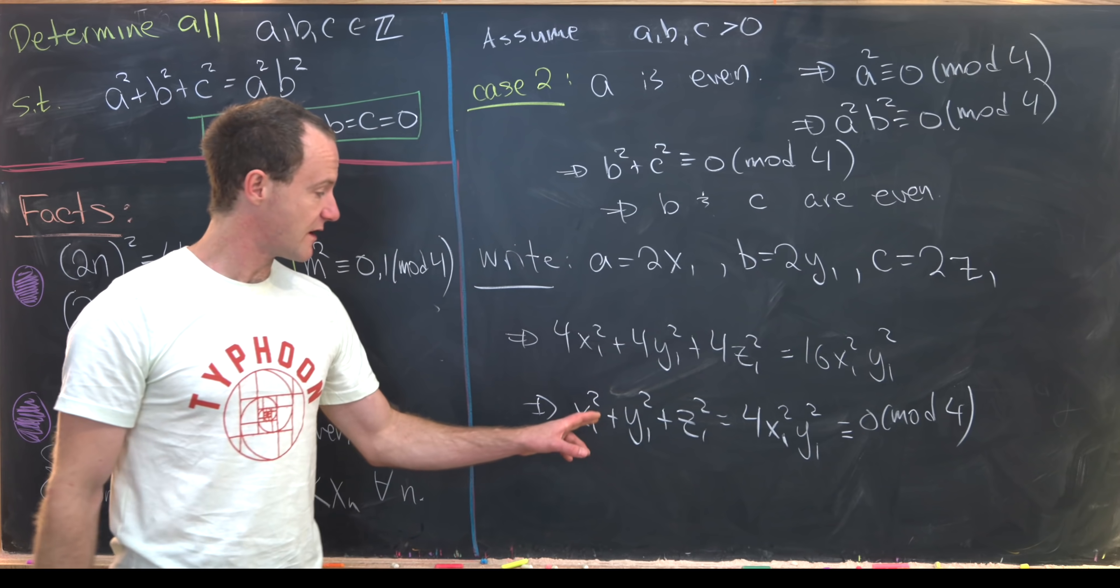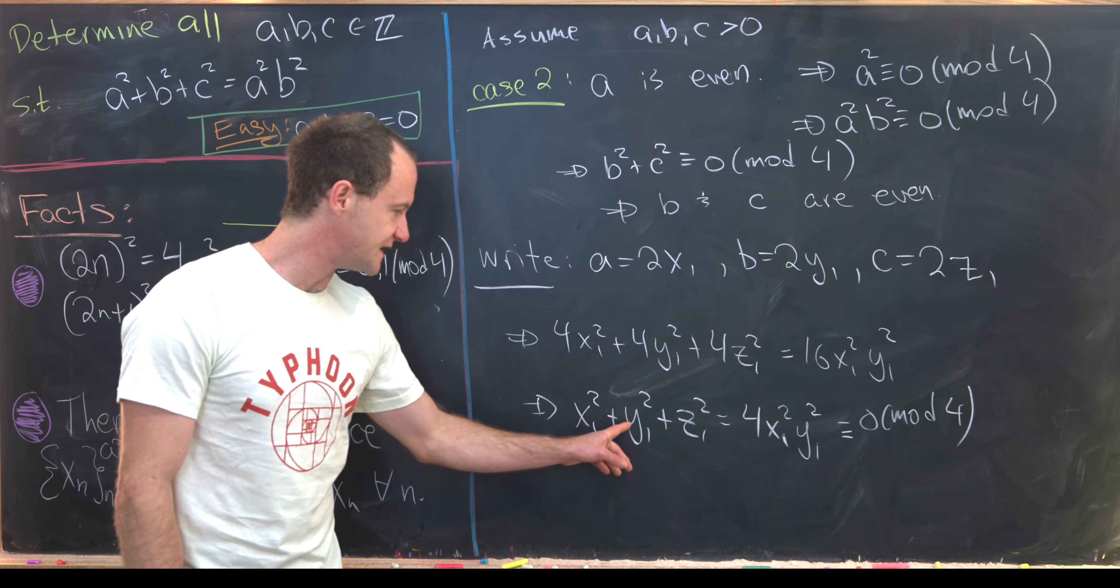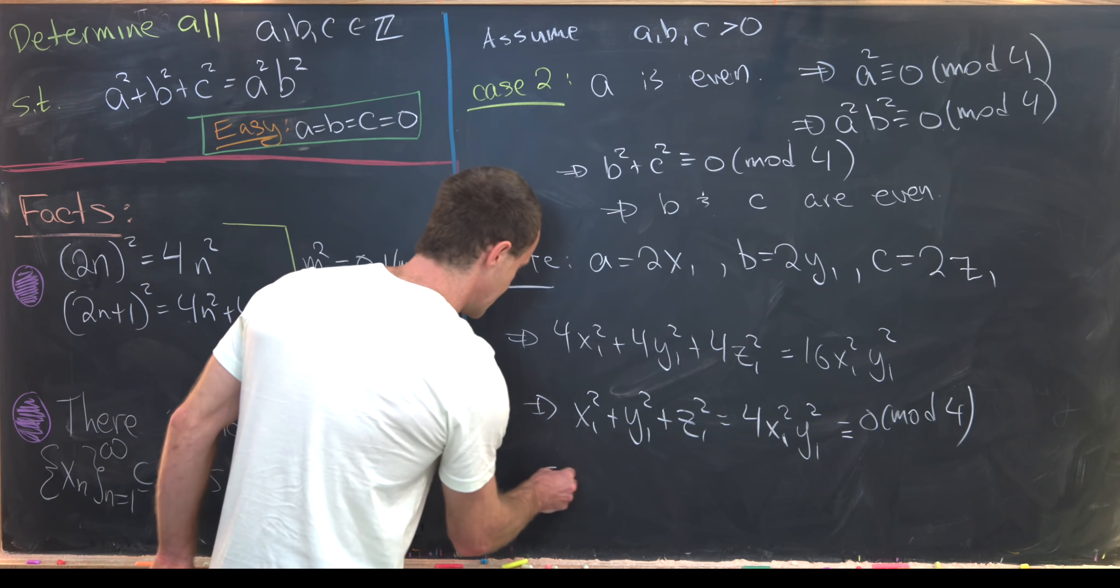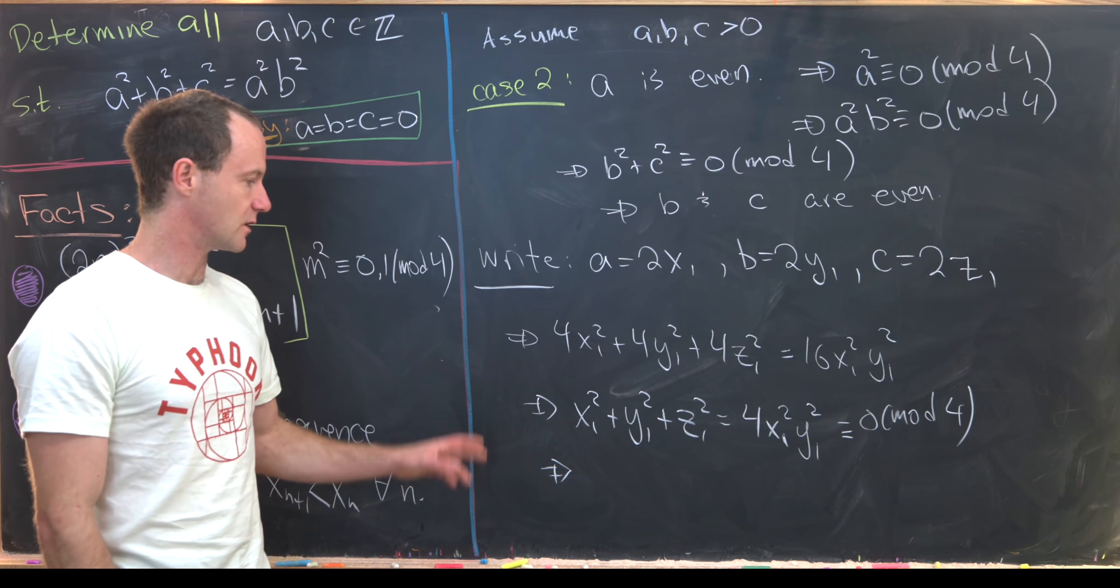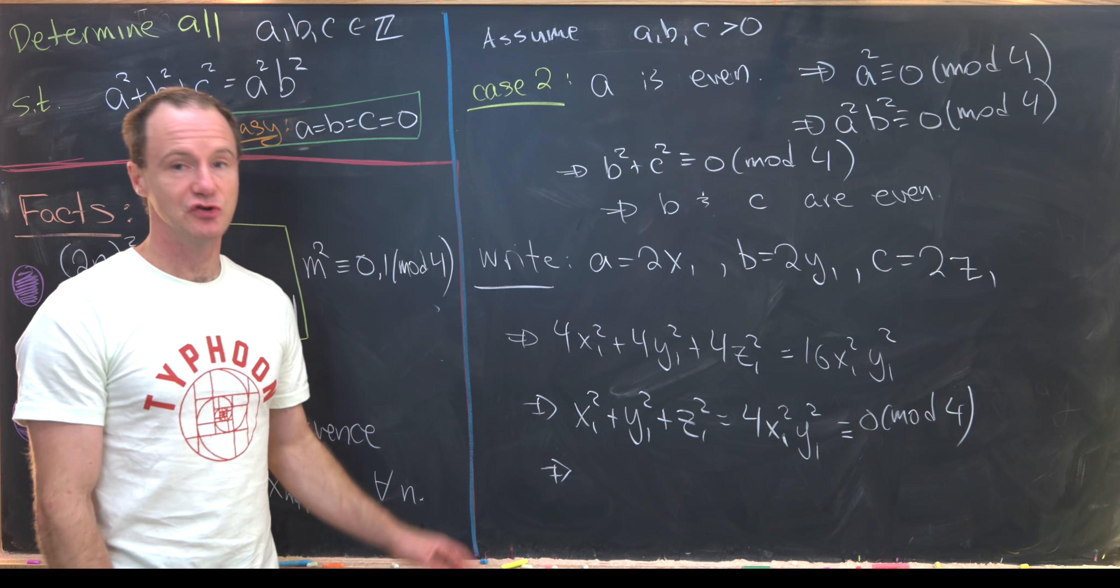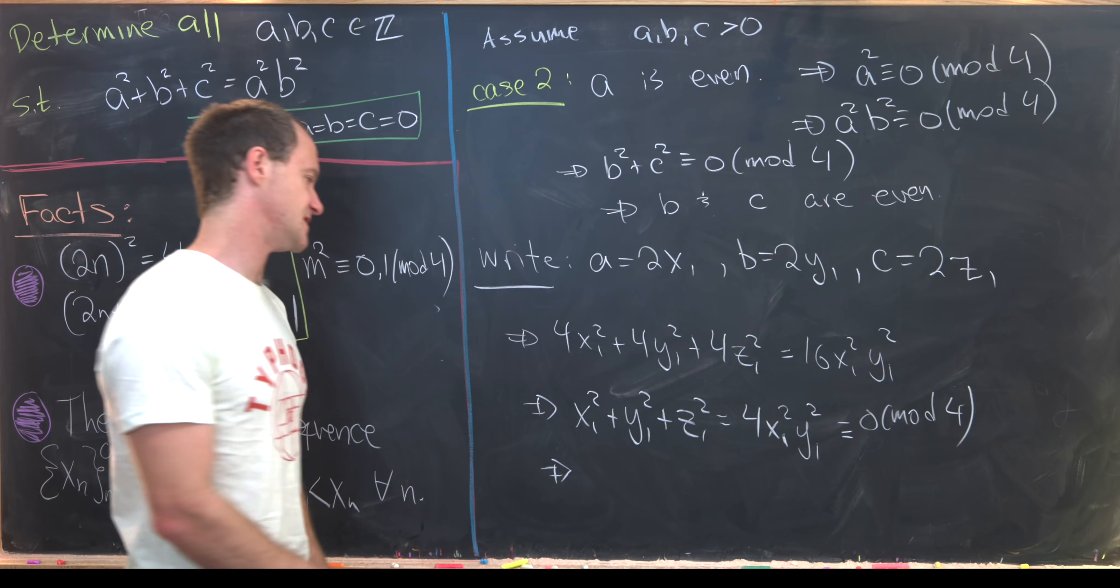But the only way for this left-hand side to be 0 mod 4 is for each of these guys to individually be even. If one of them is odd, then that'll be 1 mod 4. If two of them are odd, that'll be 2 mod 4. If three of them are odd, that'll be 3 mod 4. So they all have to be even.